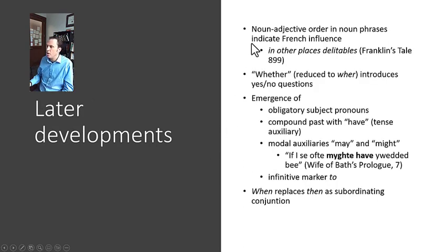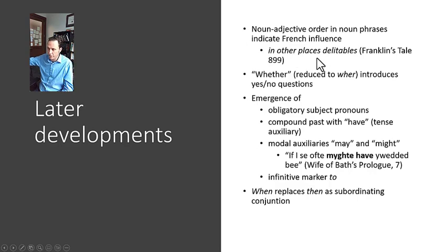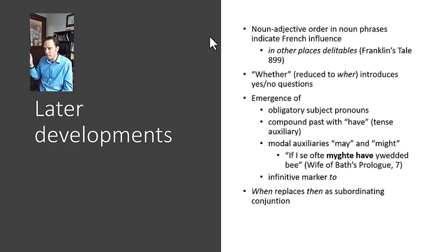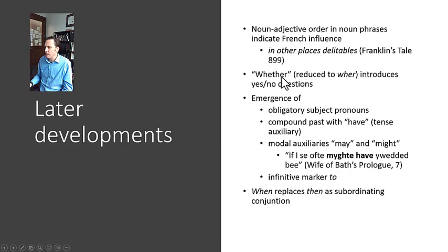Later in Middle English, we get noun-adjective order in noun phrases that indicates French influence. For example, "places delightful" rather than "delightful places" — this is really the heavy influence of French that hasn't been fully digested into English yet. We have a few examples in English of this noun-adjective word order particularly from legal Latin or for government positions, like "attorney general" — "attorney" is the noun, "general" is the adjective. "Whether" is also used to introduce yes/no questions, which is very peculiar.